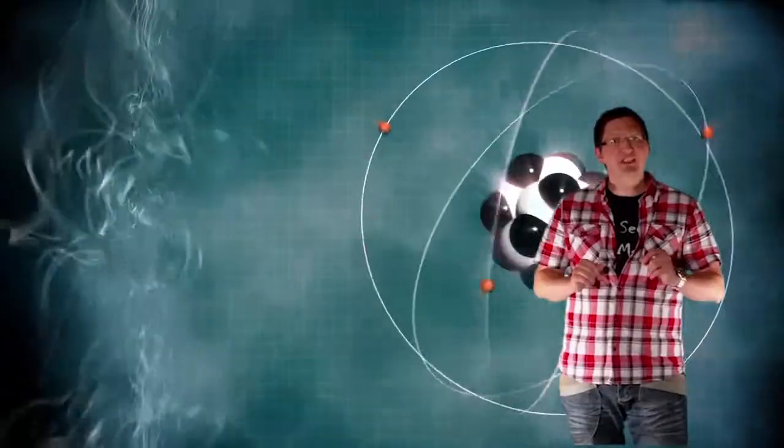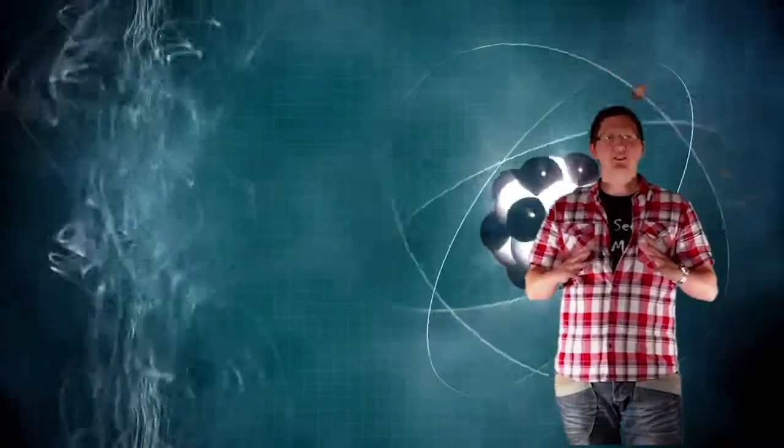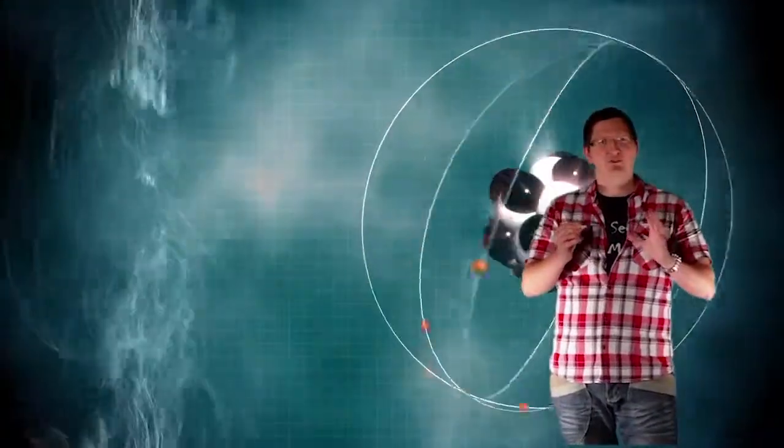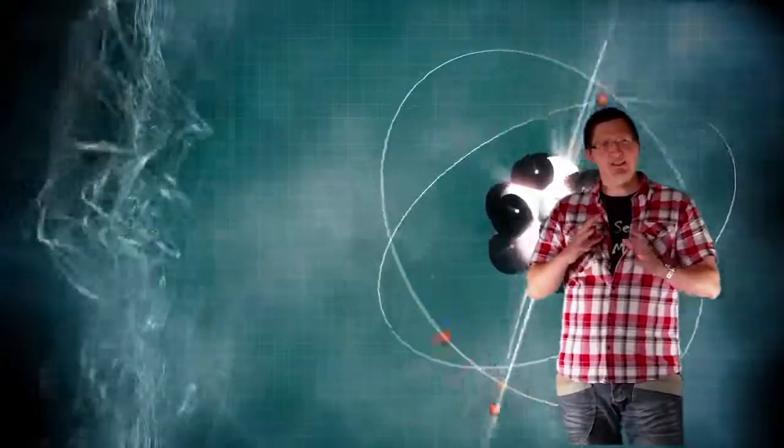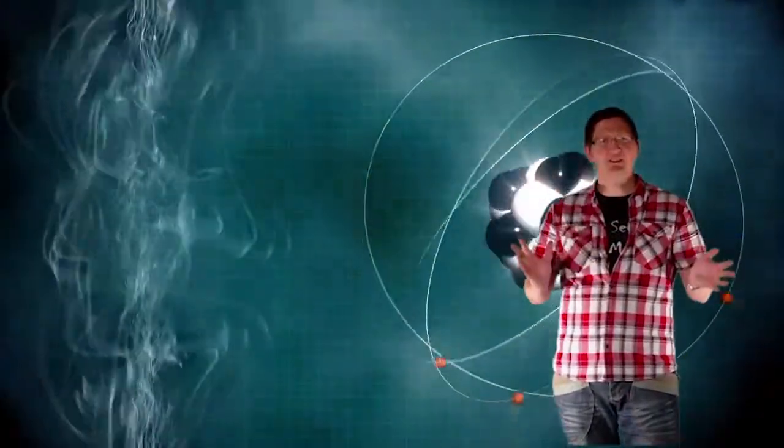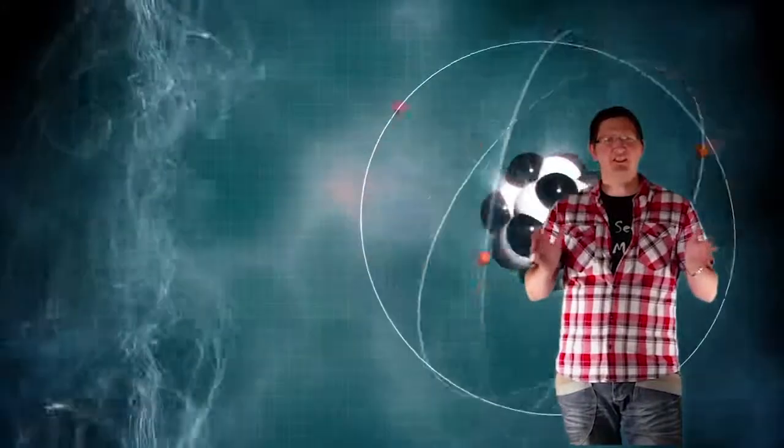379,000 years after the Big Bang, the universe cooled enough for the protons of the hydrogen nucleus to capture electrons to form atoms. It is at that point in time it's been calculated that atoms started to exist 379,000 years after the Big Bang.